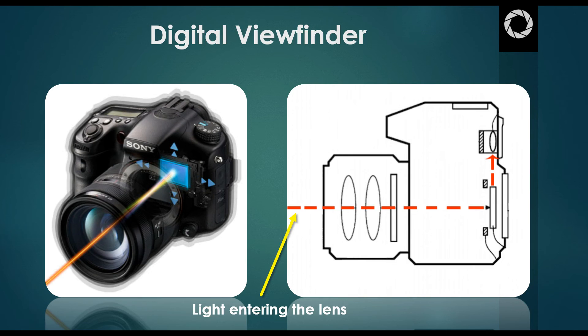How these work is that light passes through the lens and because there's no mirror to redirect it, the light goes straight to the camera's sensor. In order for you to see the picture through the viewfinder, the sensor sends a signal to a tiny little screen in the viewfinder and projects the image onto it. When you're looking through a digital viewfinder, you're really seeing a tiny little screen with a live picture on it or a live view of the scene.